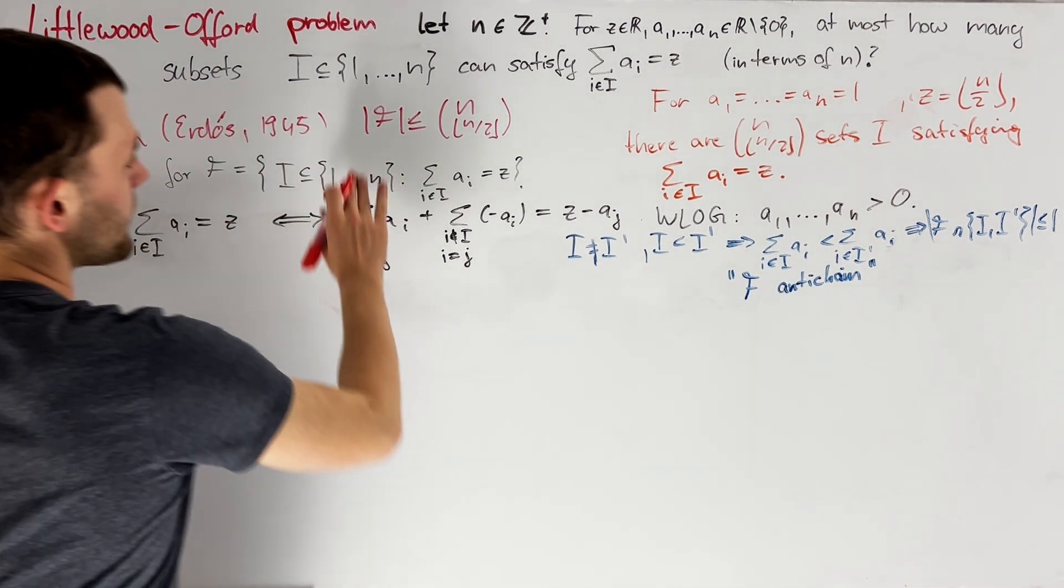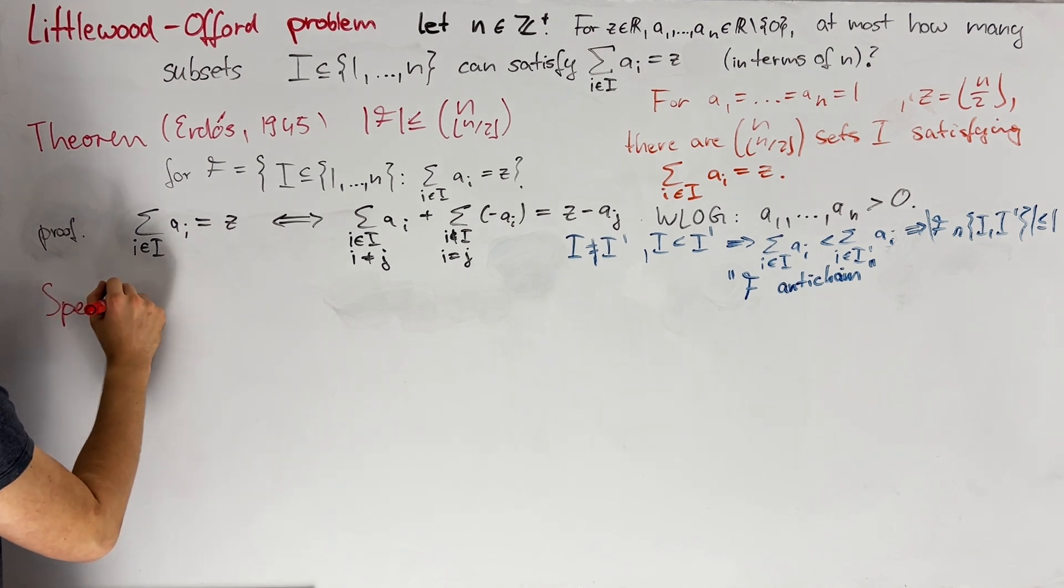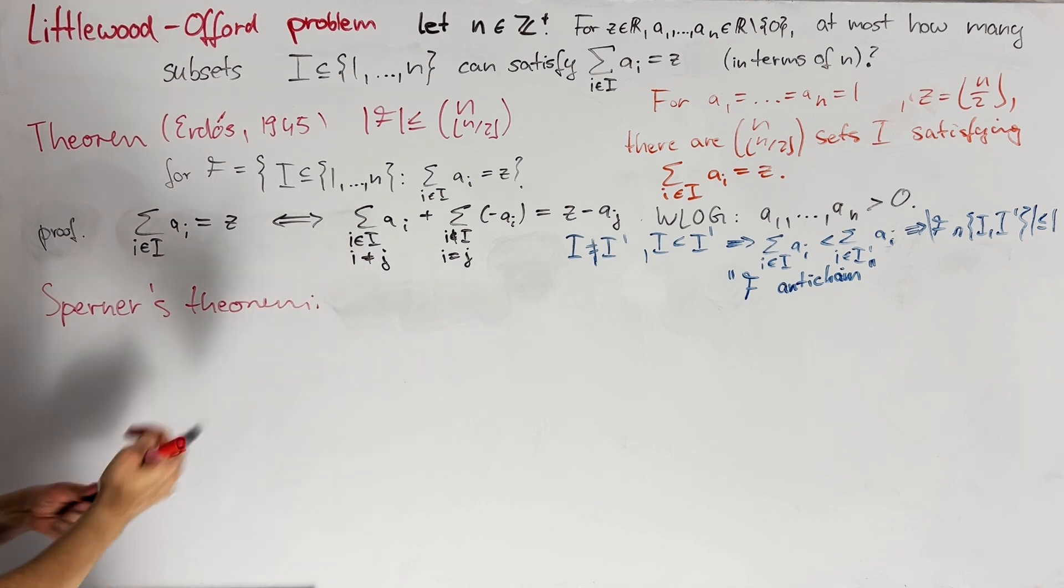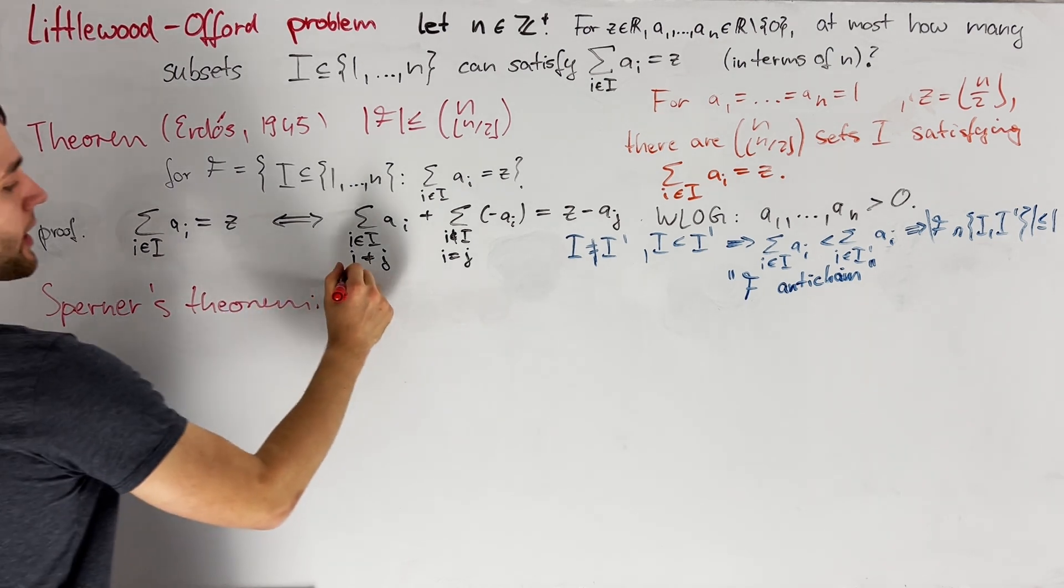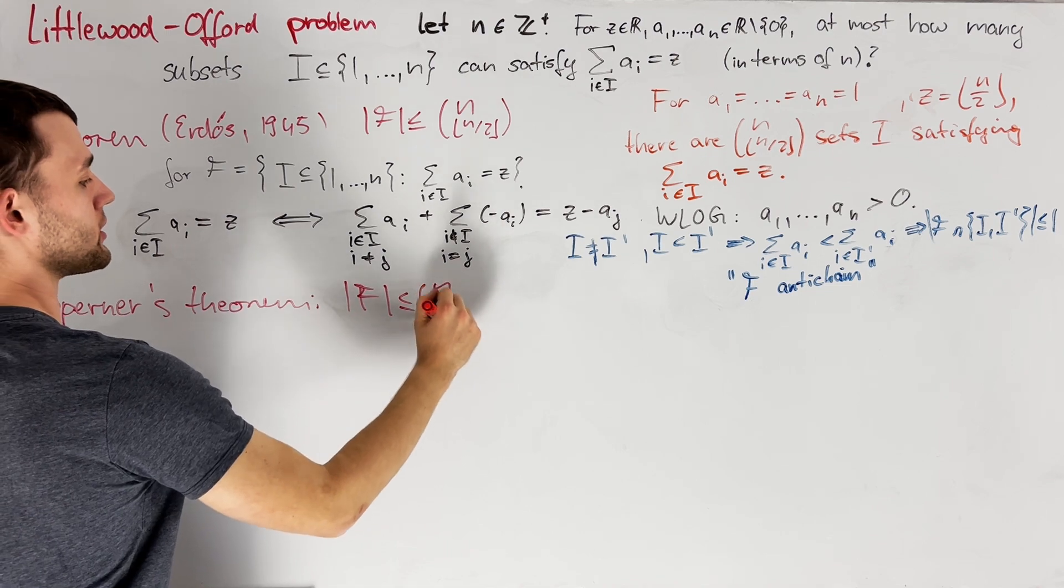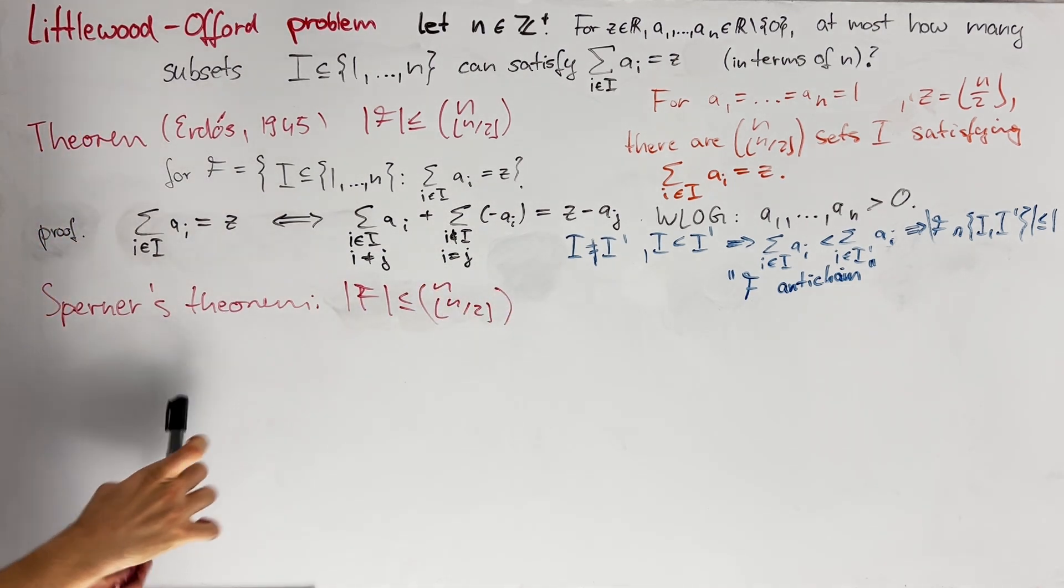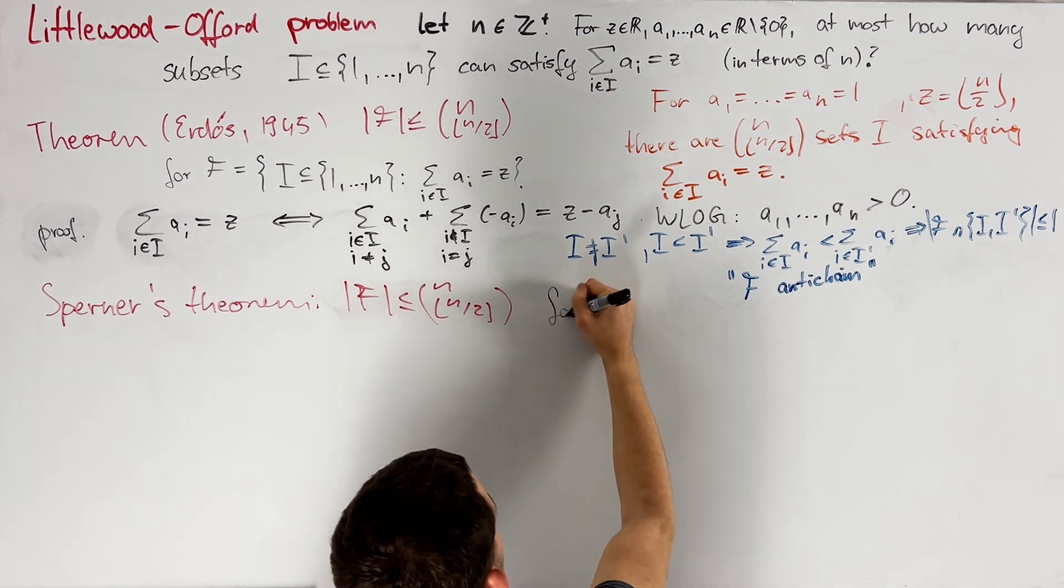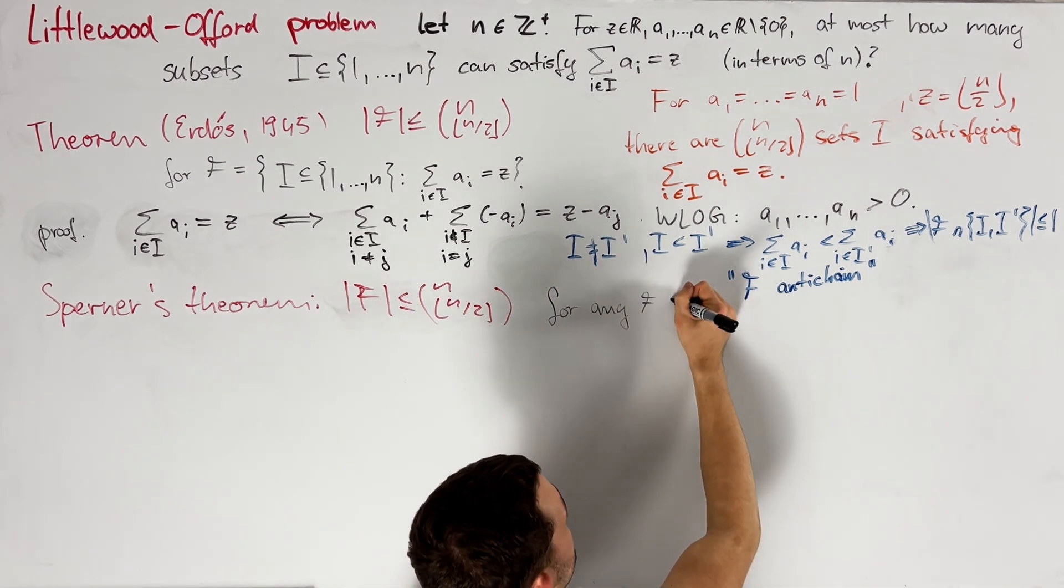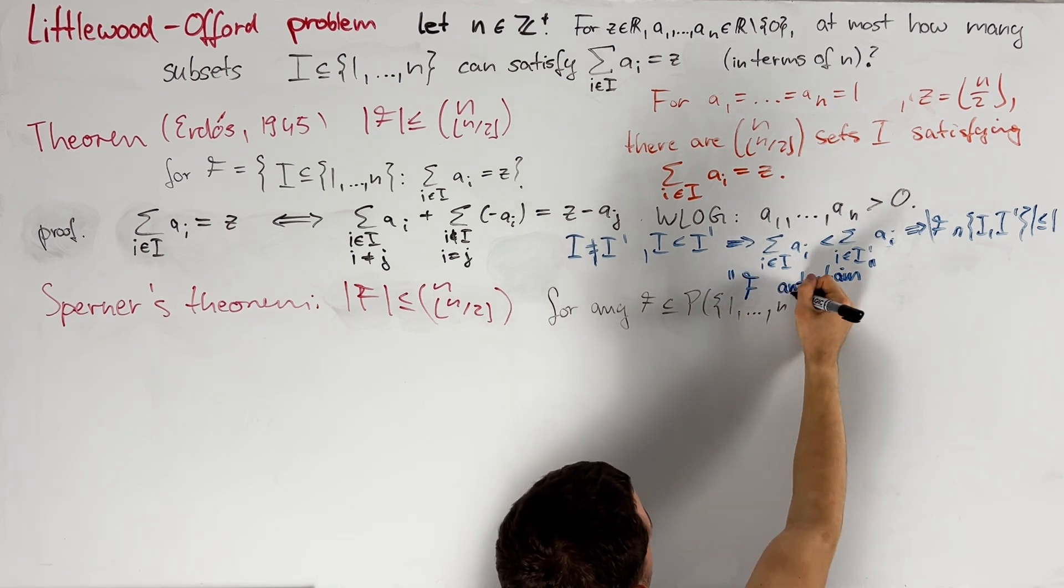Therefore, the desired bound directly follows from Sperner's theorem, which exactly states that F is less than or equal to n choose the floor of n over 2 for any anti-chain F that is a subset of the power set of 1 up to n.